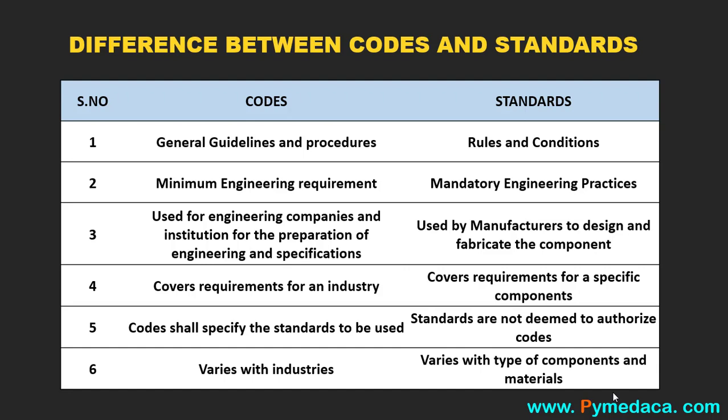The third difference: codes are generally used by engineering companies and institutions for the preparation of engineering specifications, whereas standards are generally used by manufacturers to design and fabricate components. The fourth difference: codes cover requirements for an industry — such as power, petroleum and refinery, or oil and gas sectors — whereas standards cover requirements for specific components. The fifth difference: codes shall specify the standards to be used, and codes will have a list of recommended standards, whereas standards are not deemed to authorize codes, since standards are made for particular components and items.